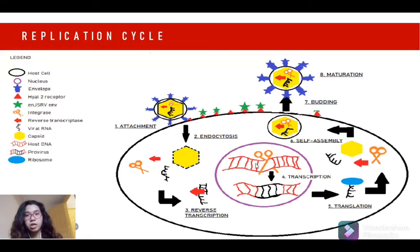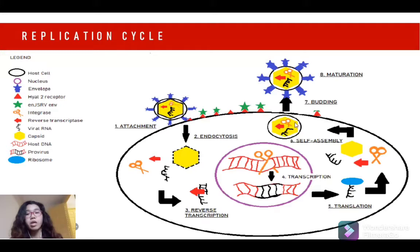The integrase is then responsible for cleaving the host DNA and inserting the viral DNA. Using RNA polymerase and normal transcription factors inside, it creates a copy of viral RNA called provirus. The provirus is then translated via ribosomes, creating viral proteins. These undergo cell assembly before budding out of the host cell membrane, and through maturation, the Jaagsiekte sheep retrovirus particle develops its new envelope layers.